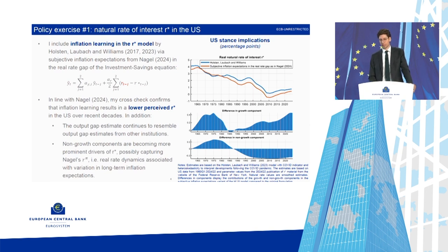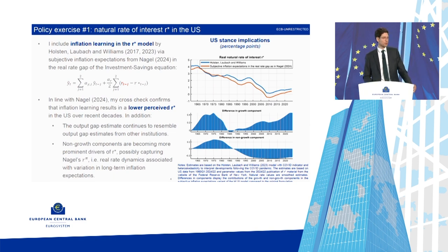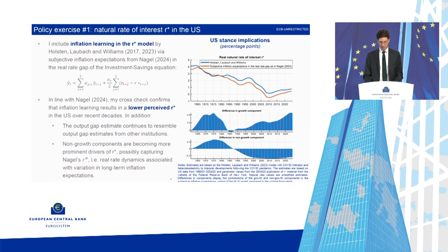I essentially confirm Stefan's results: the natural rate with this mechanism would be lower. However, I can do this using only inflation expectations — I don't need to change expectations about monetary policy. Some caveats: the Laubach-Williams model famously has wide uncertainty bands, so probably the red line is still within the blue line's confidence interval. Plus I didn't re-estimate the model — these are elements one could improve to obtain a consistent R-star with Stefan's mechanism.